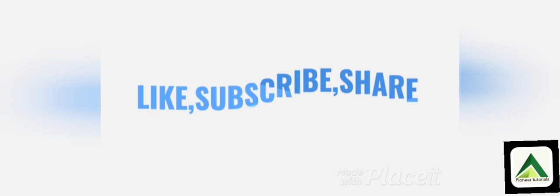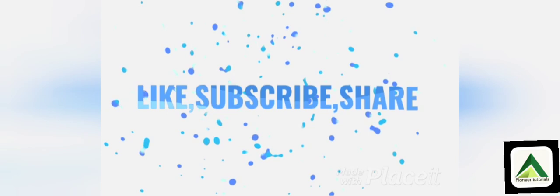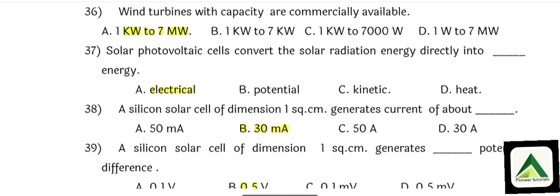Welcome to Pioneer Tutorials. If you have seen my previous video, from 35 MCQs, I will send the link in the description. Today we will see the next video, that is question number 36. Question number 36: Wind turbines with capacity are commercially available. That is option number A: 1 kilowatt to 7 megawatt.